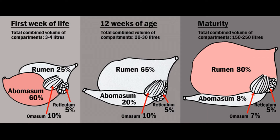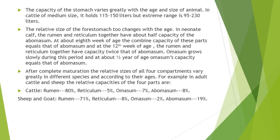The omasum also grows slowly during this period, and at about half a year of age the omasum's capacity equals that of the abomasum. After complete maturation, the relative sizes of the four compartments vary among species. In cattle: rumen 80%, reticulum 5%, omasum 7%, and abomasum 8%. In sheep and goat: rumen 71%, reticulum 8%, omasum 2%, and abomasum 19% of the stomach.